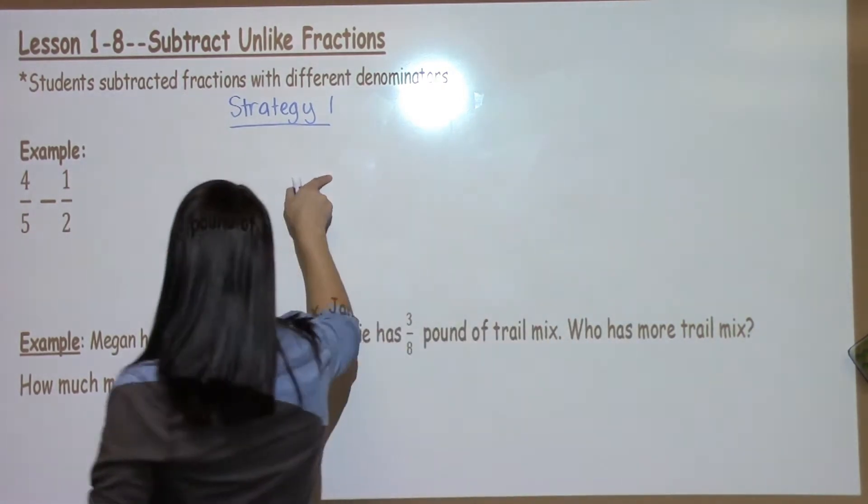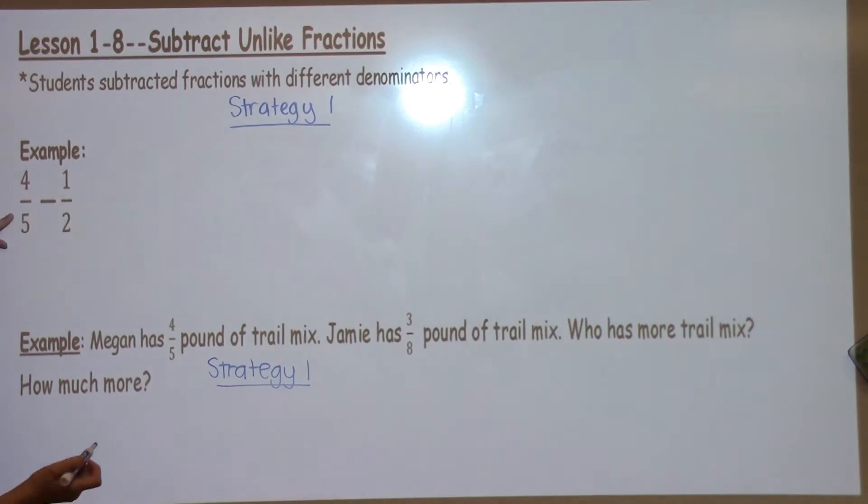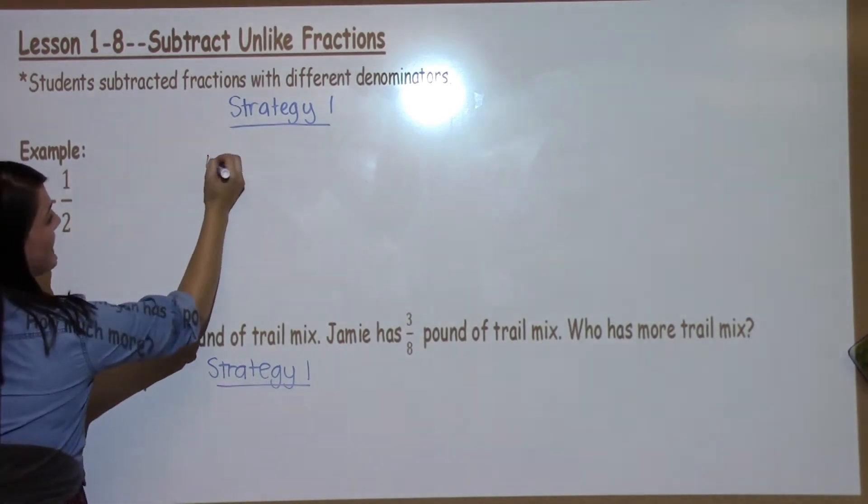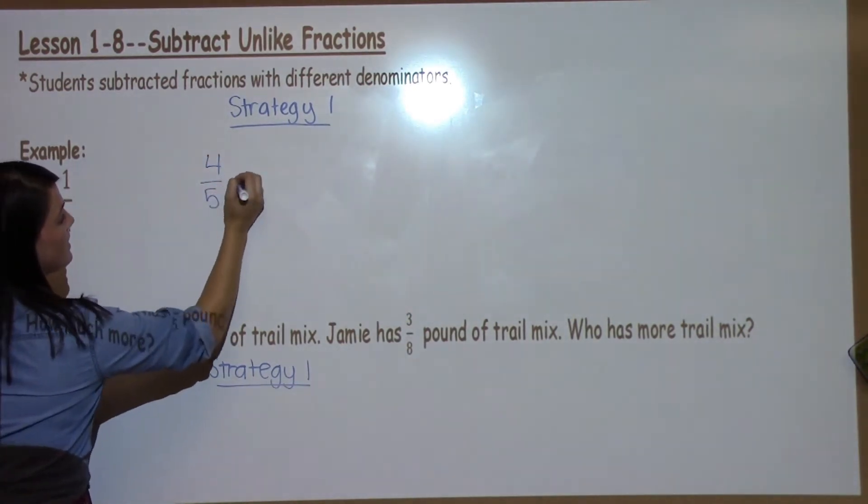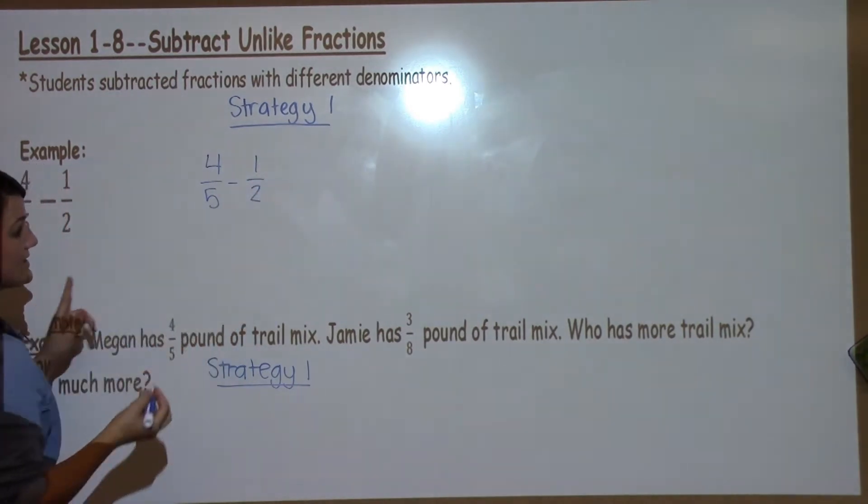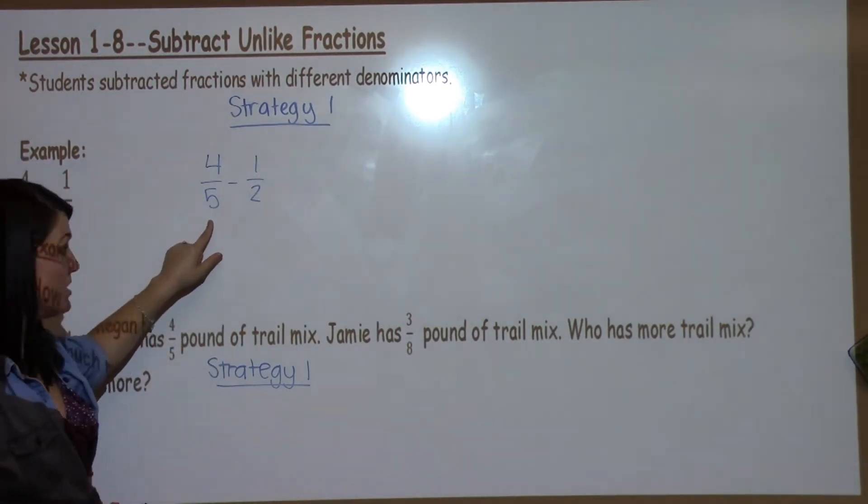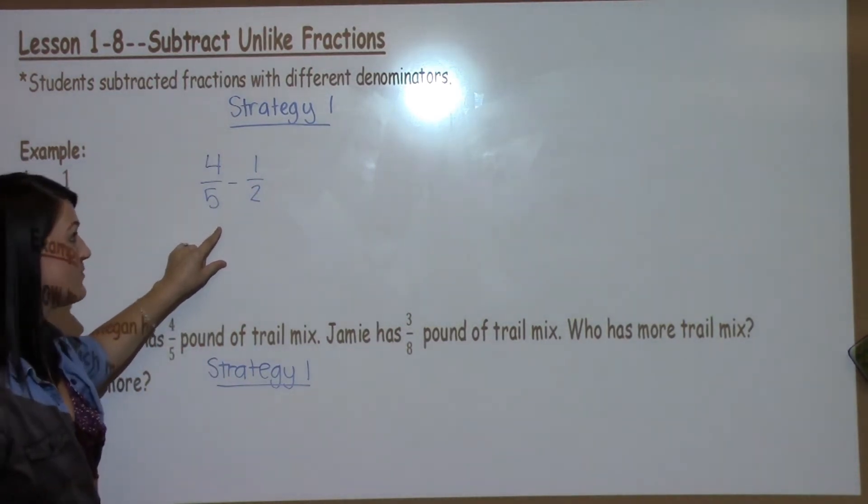So let's take a look first at this example problem. It says 4 fifths minus 1 half. I notice that my denominators are not the same so I have to make them the same before I can move on.